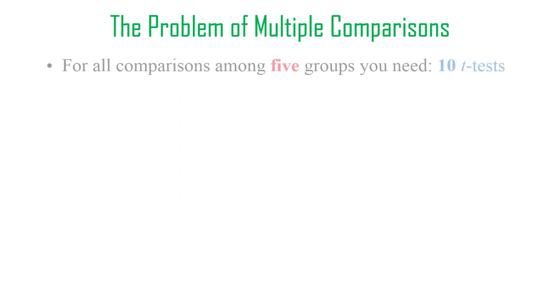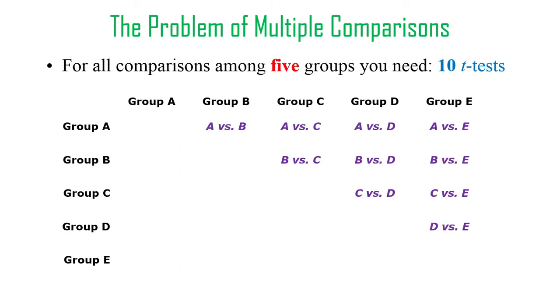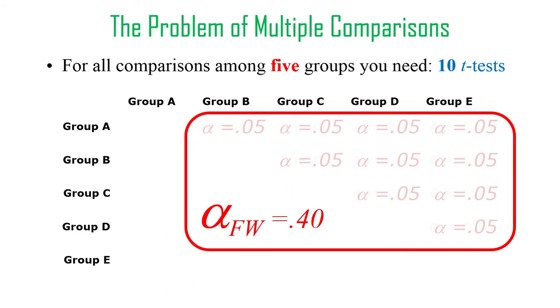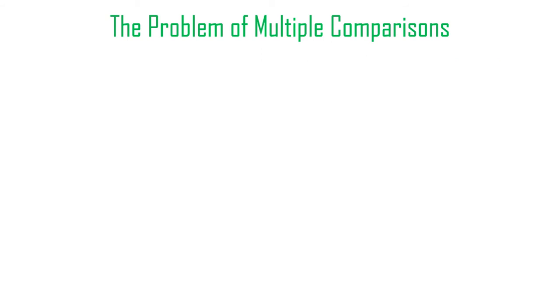If you have five groups, now you need 10 t-tests. This multiplies really, really quickly. With these 10 t-tests, they're each tested at alpha is 0.05. Family-wise error rate is 0.4. It's getting kind of ridiculous.